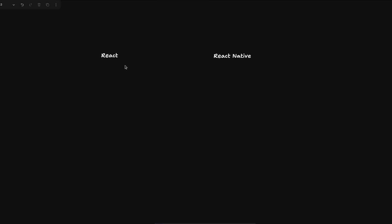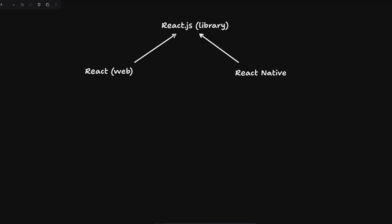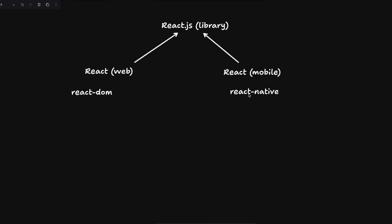How React works: the first part is React, the second part is React Native. What both have in common is the React JS library — the reconciler that understands your JSX, useState, useEffect, and so on. The difference is the renderer: React on the web ships with React DOM, while React Native itself acts as the renderer for mobile.